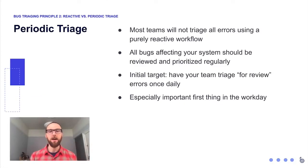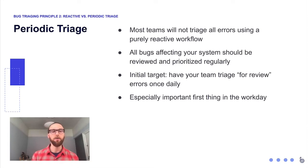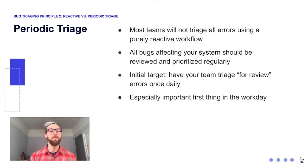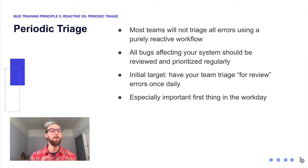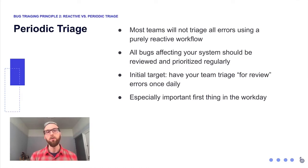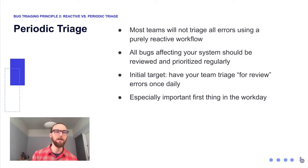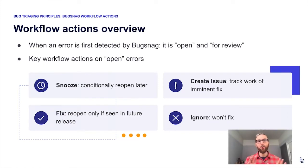Most teams aren't going to triage every single error using a purely reactive workflow. There are going to be bugs that aren't critical enough to require people to drop everything immediately — though this varies from team to team. All bugs affecting your system need to be reviewed and prioritized regularly. An initial target we recommend is to have your team triage your 'For Review' errors once per day, especially first thing in the workday or after lunch, when there may have been a lapse in coverage.